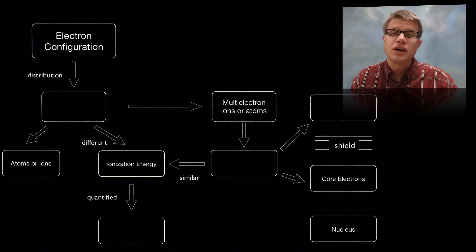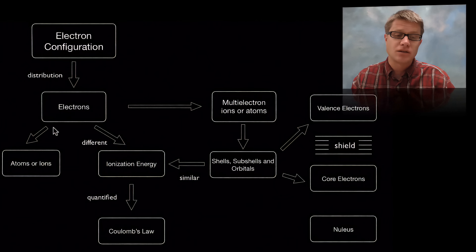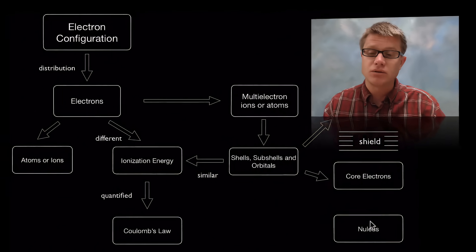So what did we learn? We learned that electron configuration is the distribution of what? Again, could you pause the video and figure out what's in the blanks? Distribution of electrons in atoms or ions. They each have different ionization energy. We could quantify that through Coulomb's law. Remember most atoms are going to have multi-electrons. And those are organized in subshells. And this property is important as well. Those inner or core electrons are going to shield the valence or outside electrons from the power of the nucleus.